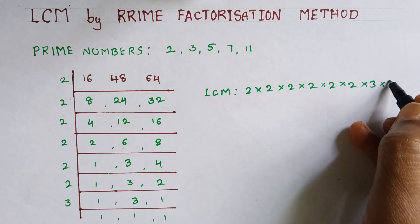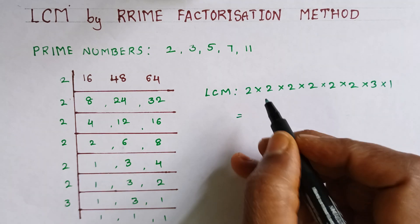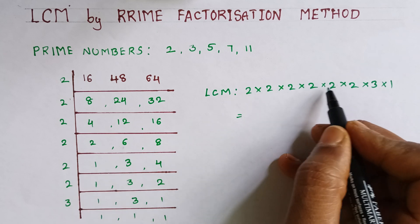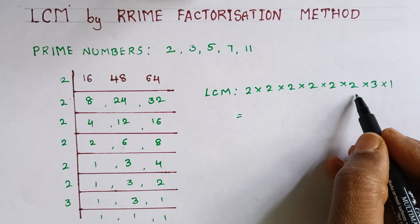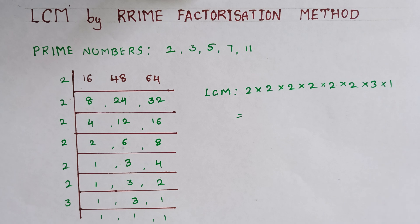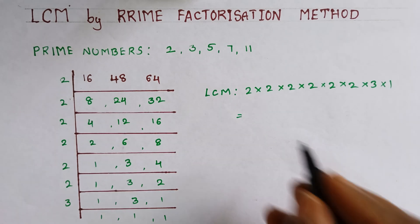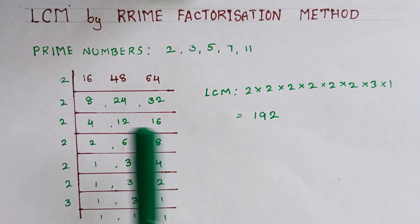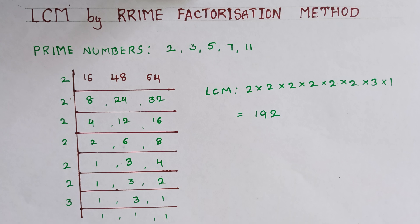So finally, two twos are four, four twos are eight, eight twos are sixteen, sixteen twos are thirty-two, thirty-two twos are sixty-four, sixty-four into three is one hundred ninety-two. You can write one ninety-two. So the LCM is one ninety-two.